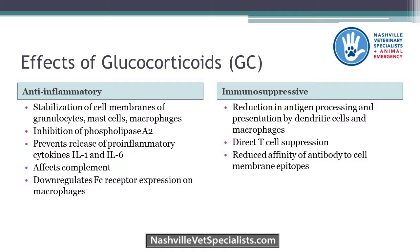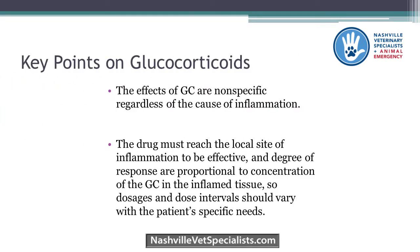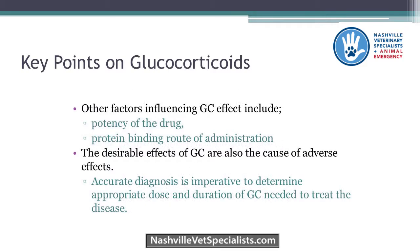At immunosuppressive doses — in addition to everything already happening — you get reduction in antigen processing by dendritic cells, direct suppression of T lymphocytes, and reduced affinity of antibody to cell membrane epitopes so antibodies don't bind as well. Effects are non-specific regardless of the cause of inflammation, so you get all the side effects regardless of what you're treating. You also have to reach the site of inflammation to be effective — the degree of response is proportional to the amount of glucocorticoid getting into that tissue.